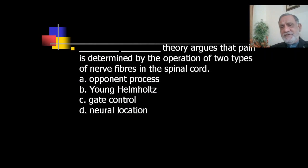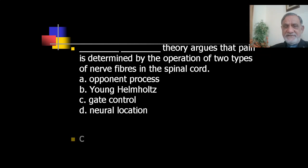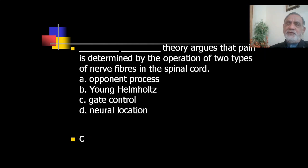Next question: Which theory argues that pain is determined by the operation of two types of nerve fibers in the spinal cord — opponent process, Young-Helmholtz, gate control, or neural location? The correct answer is C — gate control theory argues that pain is determined by the operation of two types of nerve fibers in the spinal cord.